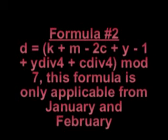Formula number 2. D equals K plus M minus 2C plus Y minus 1 plus Y div 4 plus C div 4 modulo 7. This formula is only applicable from January and February.